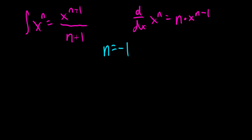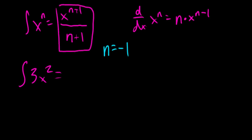Let's do another example. Say we are doing the integral of 3x squared. Using our definition, we're going to have 3x — we raise that power, so 2 plus 1 is 3 — and then divide by that new power. Our n was equal to 2 originally, so n plus 1 is 3. Then we can cancel out our 3s — they divide each other out — and we get that our answer is x cubed.